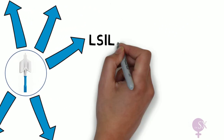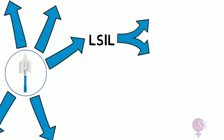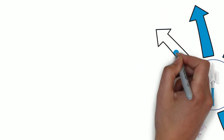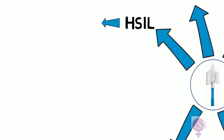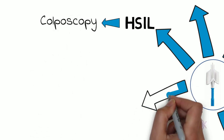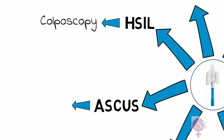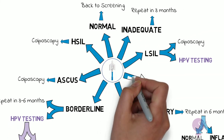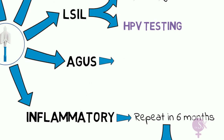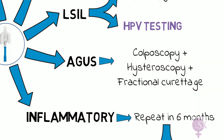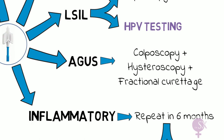For L-cell results, we again have two options: either going immediately for colposcopy, or else going down the route of HPV testing. If we have H-cell, the woman needs a colposcopy. ASCUS also requires a colposcopy. AGUS will require a colposcopy, hysteroscopy, and fractional curettage, since these atypical glandular cells may be coming from the endometrium. An endometrial sample must be obtained by means of a hysteroscopy, and a sample deep into the cervical canal also obtained by means of a fractional curettage.